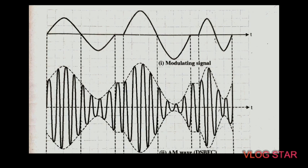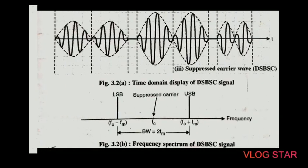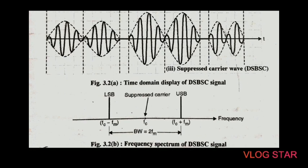The bandwidth of the double sideband full carrier system is twice FM. This is due to the simultaneous transmission of both sidebands, out of which only one is sufficient to convey all the information. Therefore, double sideband full carrier is a bandwidth-inefficient system. Due to these reasons, it was thought that if only one sideband is transmitted by suppressing the carrier and another sideband, a lot of power can be saved and bandwidth can also be reduced. The system in which only one sideband is transmitted is known as single sideband system of communication.